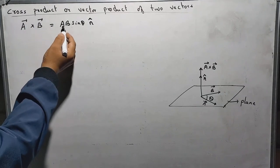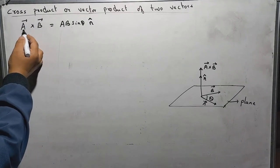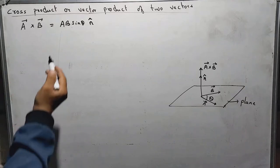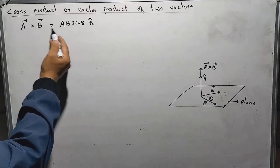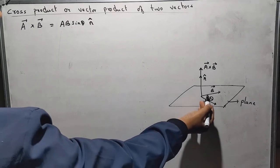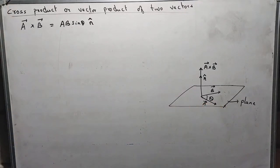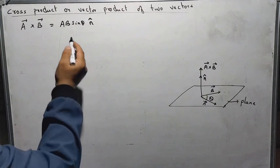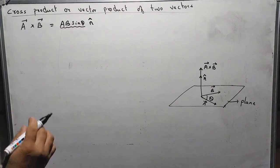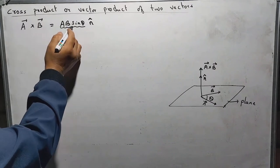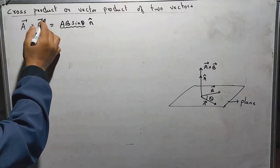Here, A stands for the magnitude of vector A, B is the magnitude of vector B, and theta is the angle between vector A and vector B. So this whole thing, A B sine theta, is the magnitude of the cross product A cross B.